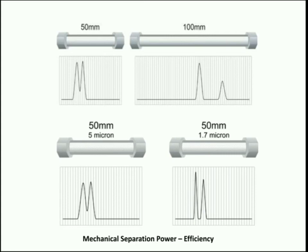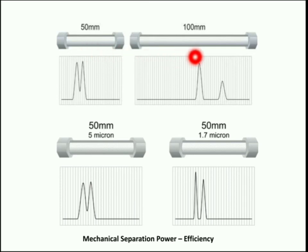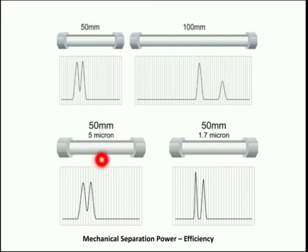We can understand mechanical separating power through this example. This diagram shows various chromatograms obtained from different types of columns. In this case, an increase in column length from 50 mm to 100 mm results in better separation of components. Similarly, a decrease in particle size of the stationary phase from 5 micron to 1.7 micron also results in better separation of components.